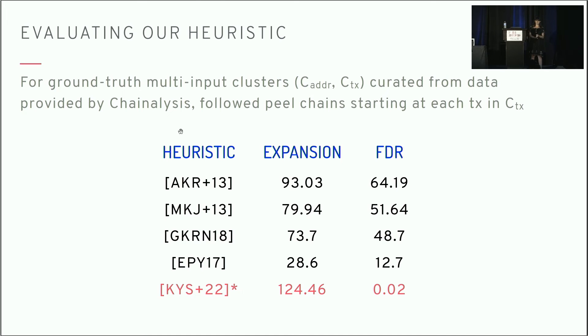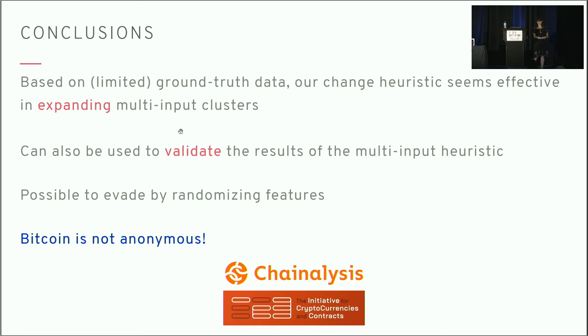So that's really it. I hope I've at least piqued your interest in taking a look at the paper. It does contain more results than I've presented. What I've presented is, of course, limited—we had 120 clusters, it's not that many. But it does seem to be relatively effective, at least based on this initial data. I'll mention there's another result in the paper that I really like, which is that we can also use this heuristic to actually validate the results of the multi-input heuristic. We can treat it as an orthogonal way of clustering things together and then seeing if they agree on the results or not.